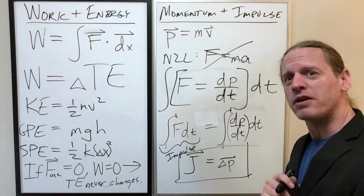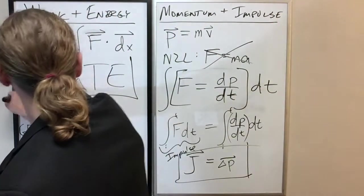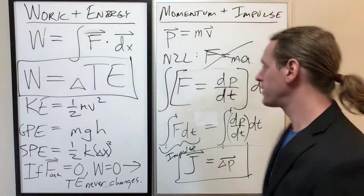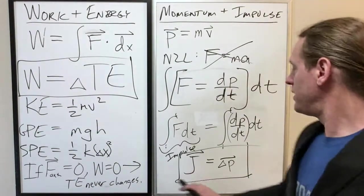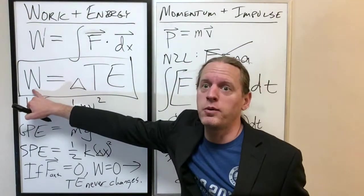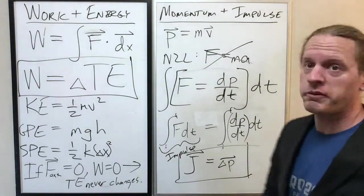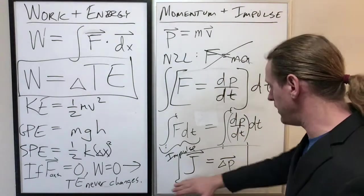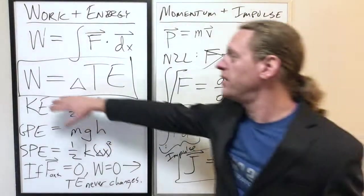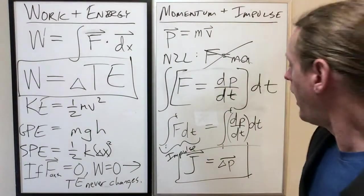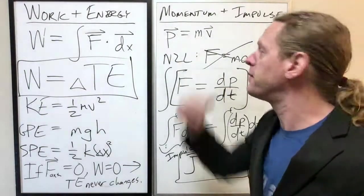So this right here, the impulse that's applied equals the change in momentum. Do we see anything that looks like that on the board? Yeah. The work that's applied equals the change in energy. The impulse that's applied equals the change in momentum. Now there's a difference here. This is a vector equation, this is a scalar equation.